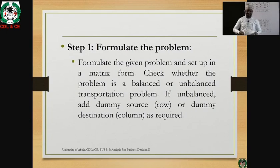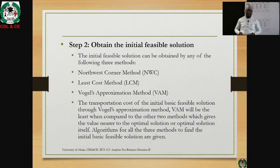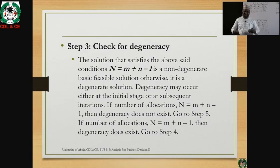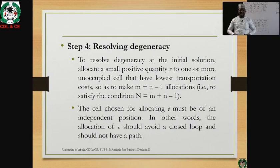We formulate the problem and check whether it is a balanced or unbalanced transportation model. If it is unbalanced, we introduce either a dummy row or dummy column as required. Then we obtain the initial feasible solution using the northwest corner rule, the least cost method, or the Vogel approximation method. We then check for degeneracy, which is also what we are going to do in this model.